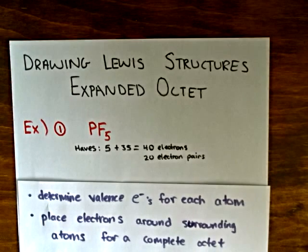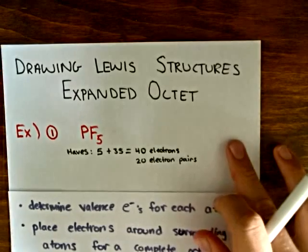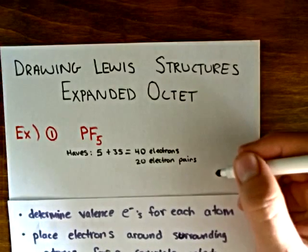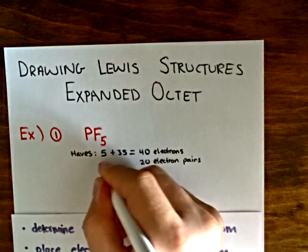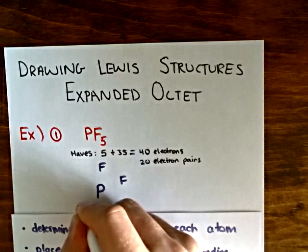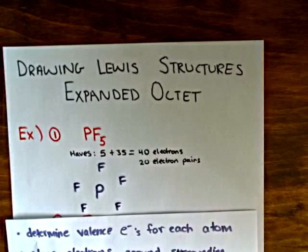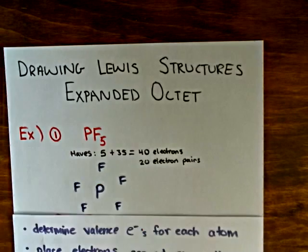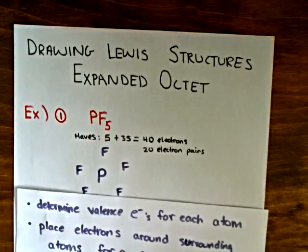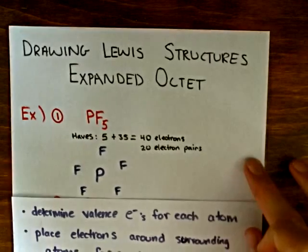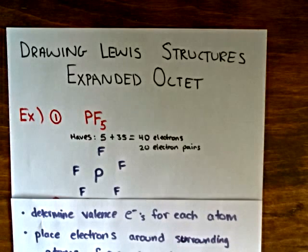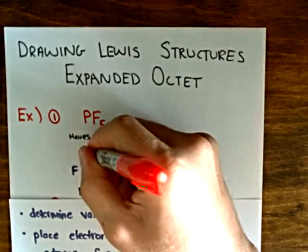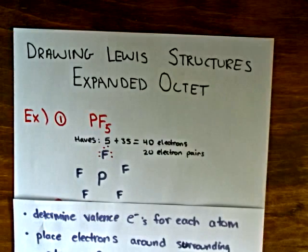Now we can draw a general structure that will describe what this molecule looks like. We know that phosphorus will be in the center and it will be surrounded by fluorine. The next thing that I do is draw in the electron pairs around each of the peripheral atoms in order to make them have a stable octet. So we have 20 electron pairs to work with.